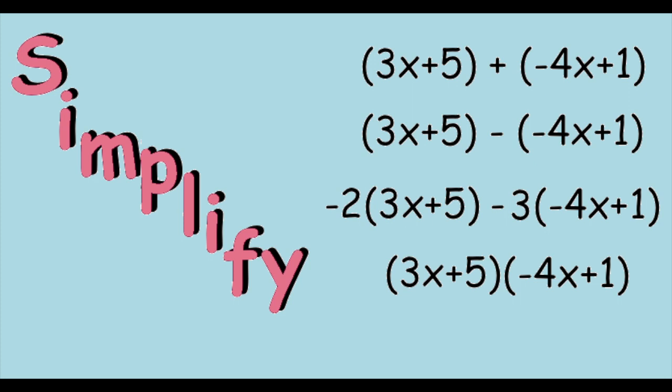Alright, we're going to see two algebraic expressions: 3x plus 5 and negative 4x plus 1. We're going to do all kinds of things with them. We're going to add them, subtract them, take a linear combination of them, and finally we're going to multiply them.